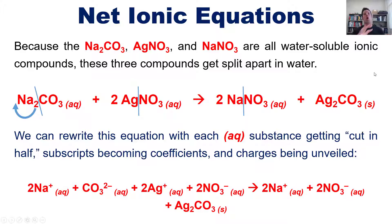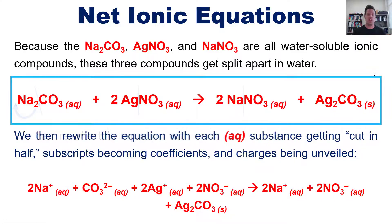So, once again, if we write our overall precipitation equation in this form, it is called a molecular equation, because all of the molecules are still written in their molecular forms. Molecular equation. Okay? They're all whole molecules that have not been broken apart.